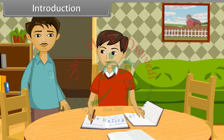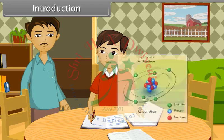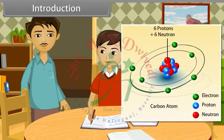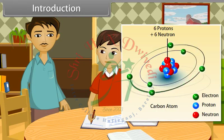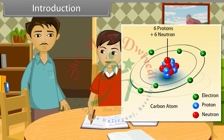Atoms joined together to form a molecule. What kind of materials are there in the atoms? Atoms consist of electrons, protons and neutrons, and a central core which is called the nucleus.